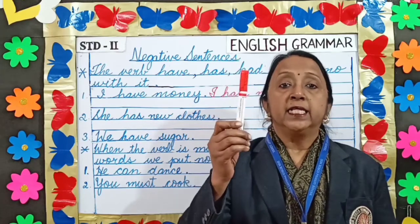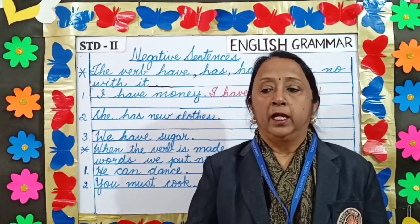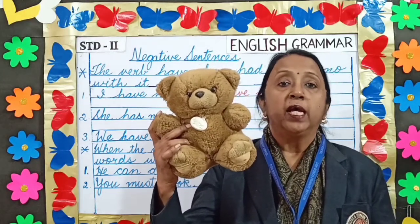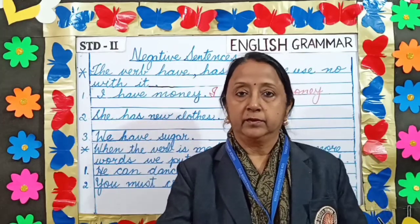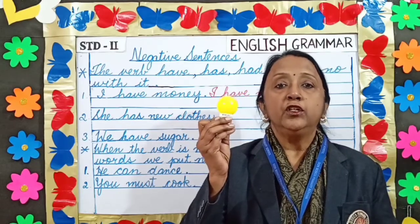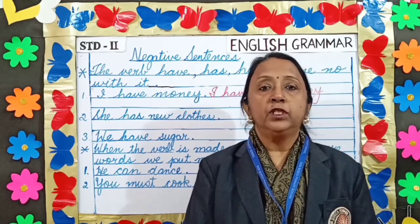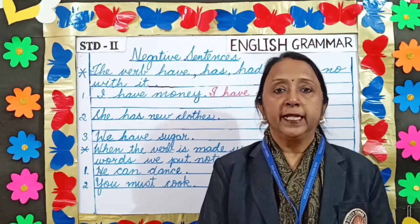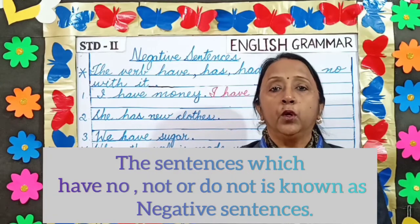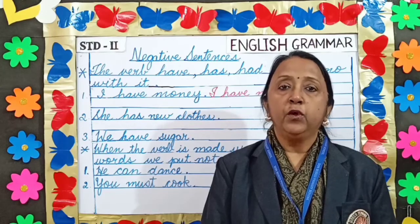Is this a ruler? No, it is not a ruler. Is this a parrot? No, it is not a parrot. Is this a candle? No, it is not a candle. You have seen that in all these sentences we have used 'no.' This is called a negative sentence. So, what are negative sentences? The sentences which have 'no,' 'not,' or 'do not' are known as negative sentences. Let's see a few examples.